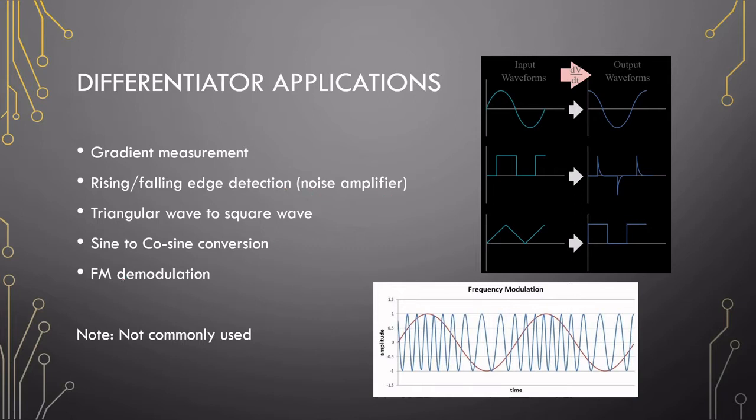The last application is FM demodulation. In an FM signal, the information sits in the frequency. So due to the chain rule, whenever you differentiate a signal like this,